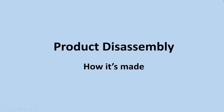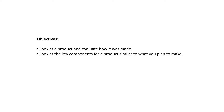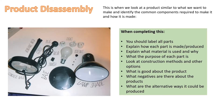In today's lesson we are looking at product disassembly — how it's made. The objectives are to evaluate how a product was made and look at the key components for products similar to what you plan to make. This is when we look at a product similar to what we want to make and identify the common components required to make it.